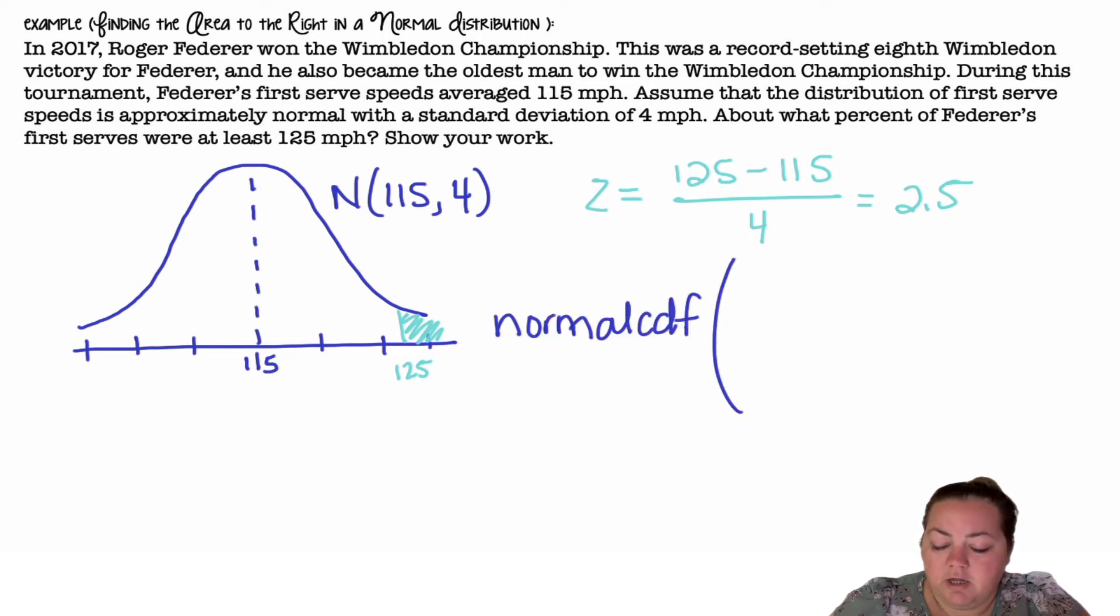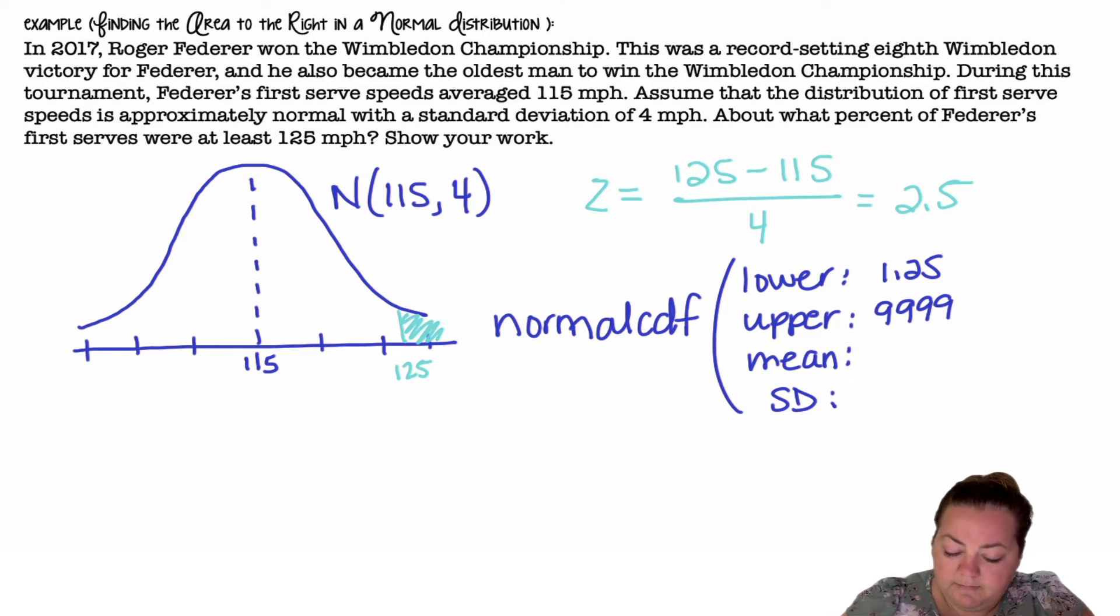If I use the calculator, I'm doing a normal CDF. My lower bound this time would be 125. My upper bound would be 9999. My mean should be 115, and my standard deviation 4.